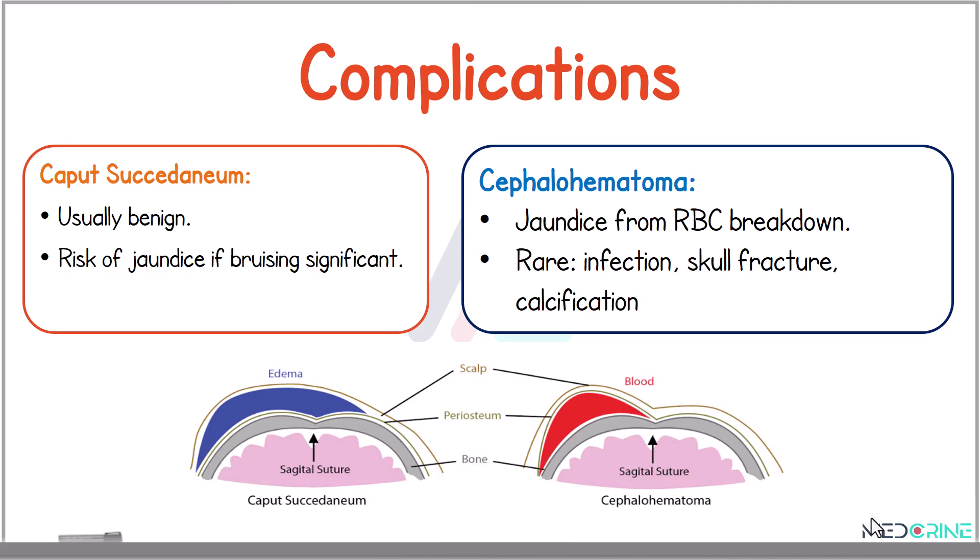Regarding complications, caput succedaneum is generally benign, with little risk of jaundice if bruising is significant. On the other hand, cephalohaematoma causes jaundice resulting from excessive red blood cell breakdown, and in rare cases there could be infection, skull fracture, or calcification of the area.